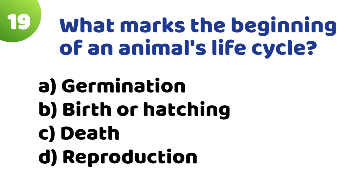Question 19: What marks the beginning of an animal's life cycle? Option A: Germination. Option B: Birth or hatching. Option C: Death. Option D: Reproduction.